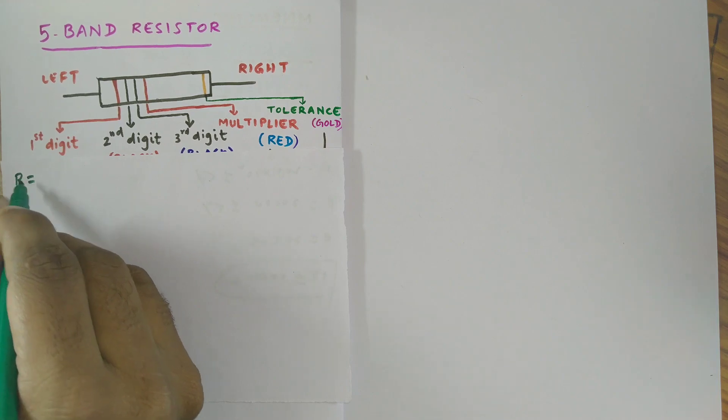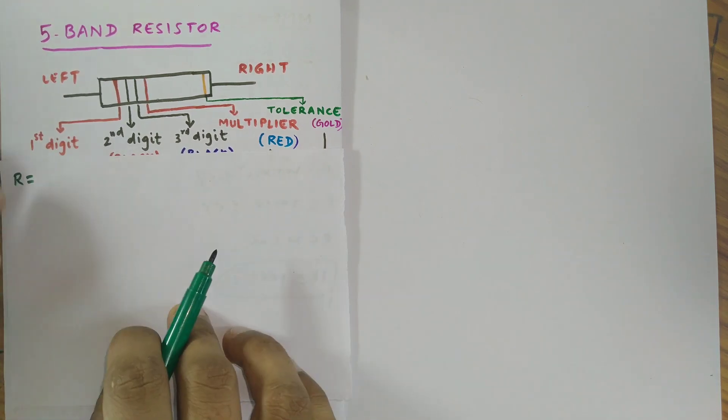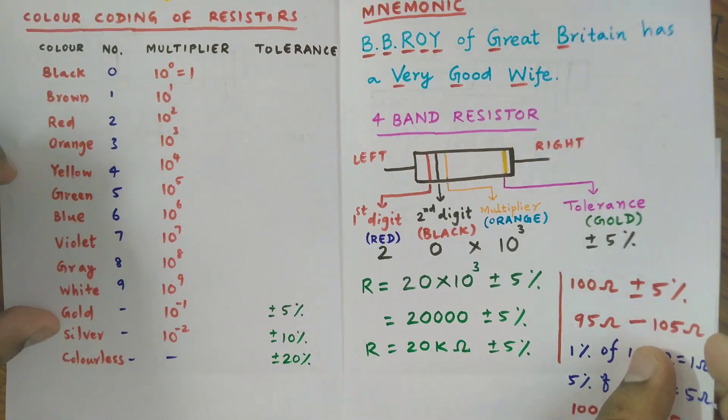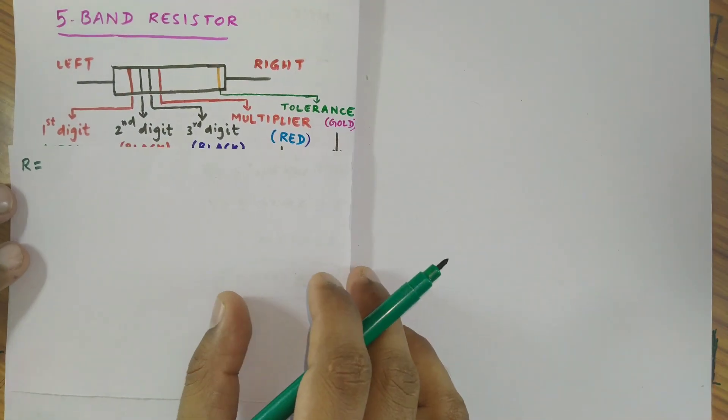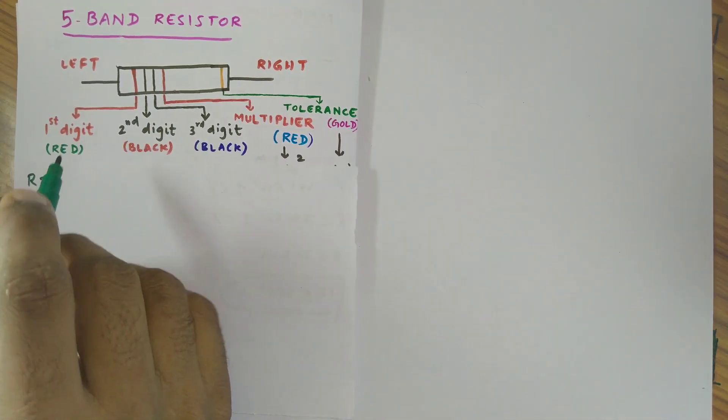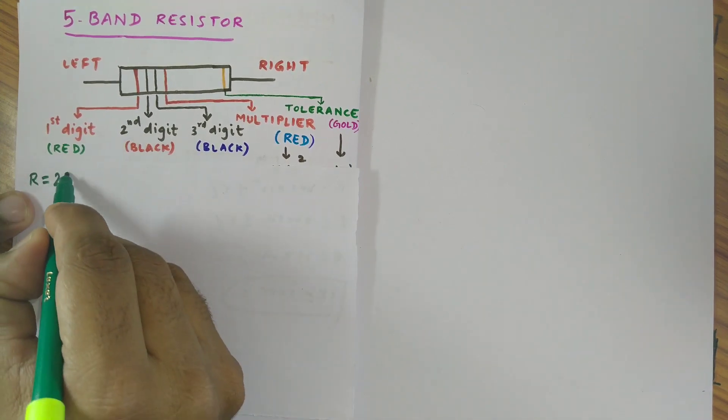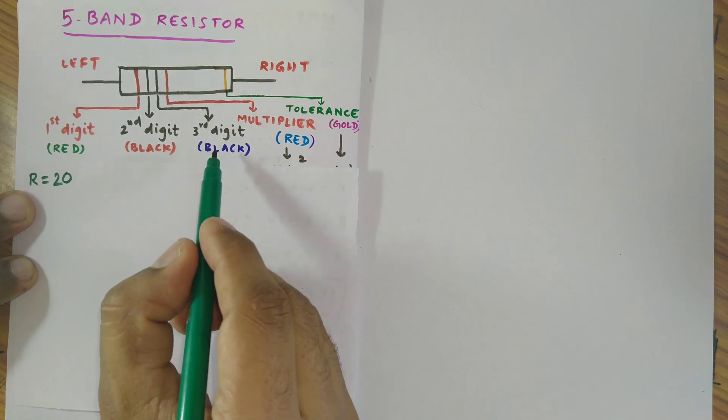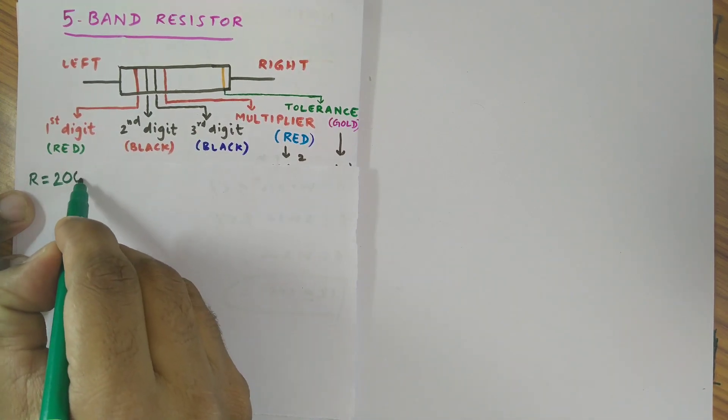R which represents resistance. For red I have 2 from this table column. For black we have 0, for red 2, for black 0. For the 3rd ring which is black in color we have 0 again.